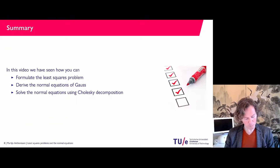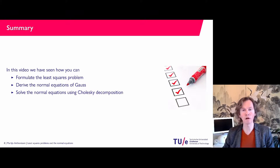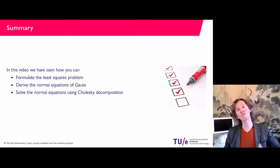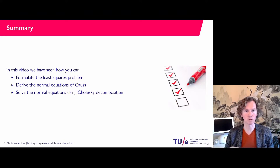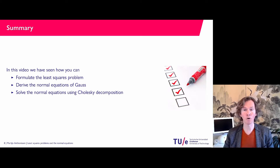To wrap up: we have seen how to formulate the least squares problem, derived the normal equations of Gauss, and shown how to solve them using Cholesky decomposition and forward and backward substitution. That concludes this video, and I hope to see you in the next one.